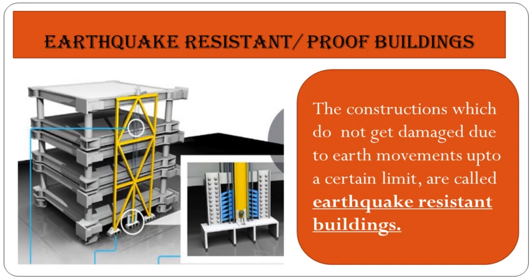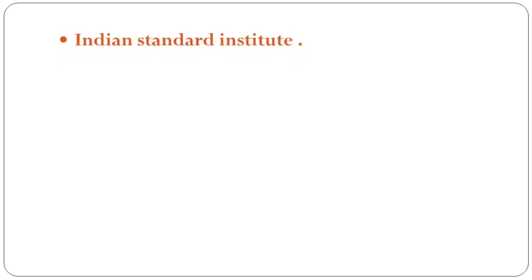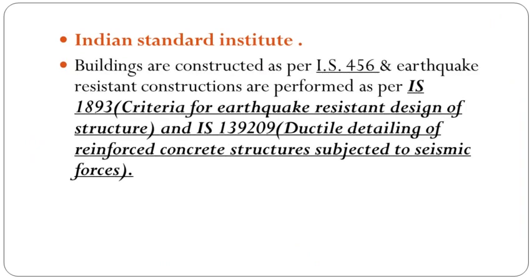Earthquake-resistant or earthquake-proof buildings are constructions that do not get damaged due to earth movement up to a certain limit. Before or during construction, the building is designed to withstand the vibrations caused by an earthquake. To construct tall buildings, the Indian Standards Institute has made codes: buildings are constructed as per IS 456, earthquake-resistant construction is performed as per IS 1893 (Criteria for Earthquake Resistant Design of Structures), and IS 13920 (Ductile Detailing of Reinforced Concrete Structures Subjected to Seismic Forces).